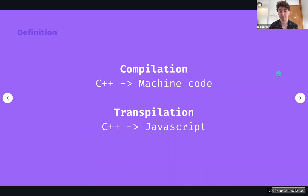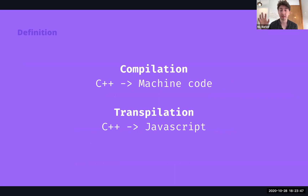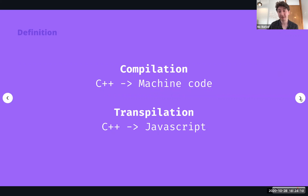For a more direct example, compilation would be the process of using a compiler to transform C++ into machine code, into object files, into executables. And transpilation would be the process of transforming C++ code into equivalent JavaScript code. If you've used C++ before, you'd probably be thinking: why on earth would I write something in C++ and then transform it into JavaScript? Well, there are actually a lot of good reasons, and transpilation is very heavily used in the web front-end space.